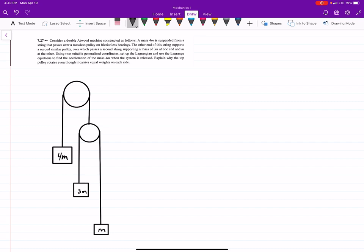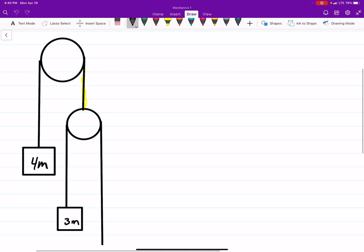So this is problem 7.27 from Taylor's mechanics book, and we have this double pulley system where one of the lines of the pulley goes to just another pulley itself. This is where we're going to use Lagrangian mechanics in a way that you really couldn't do with Newtonian mechanics, because it starts to get kind of complicated.